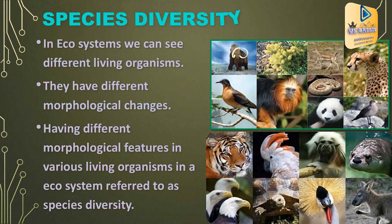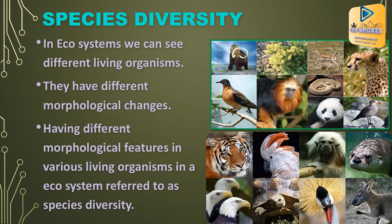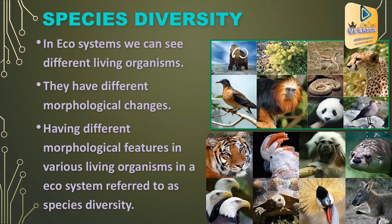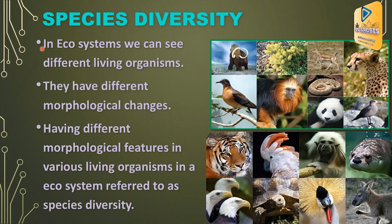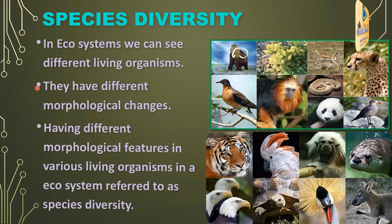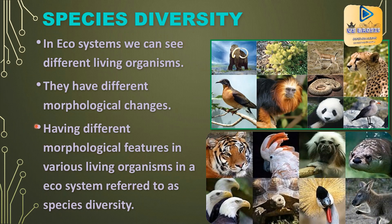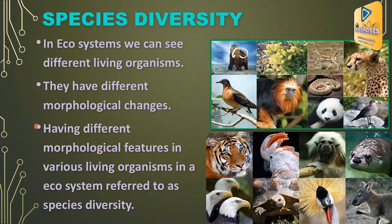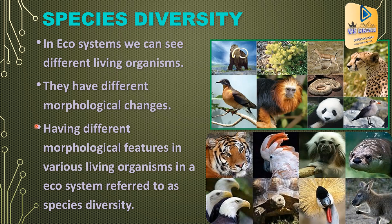Then about species diversity. In ecosystems, we can see different living organisms. They have different morphological features. Having different morphological features in various living organisms in an ecosystem is referred to as species diversity.